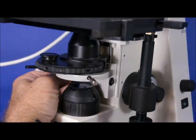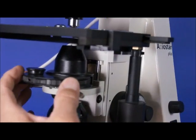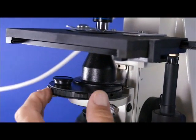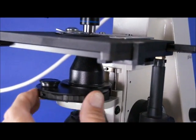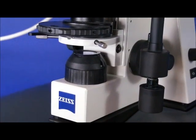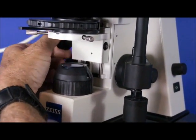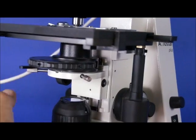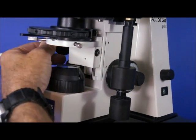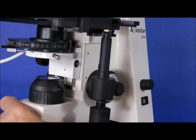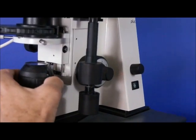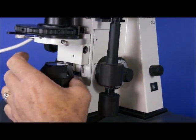Moving down the line there's a phase condenser which is outfitted with four phase positions, bright field and dark field. The condenser is both focusable and centerable and you can also remove it easily for cleaning and adjusting. This microscope is also equipped with a field diaphragm so that you can set up for true Kohler illumination.